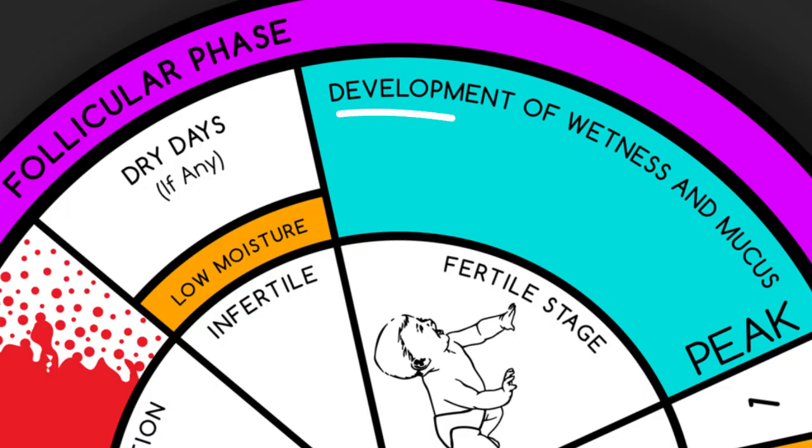The ovulatory stage begins when cervical mucus permits the sperm to pass through the cervix, and during this time the woman feels increasingly wet at the vulva. This stage can begin five days before ovulation occurs, because sperm can live for up to five days in favorable cervical mucus waiting for ovulation.